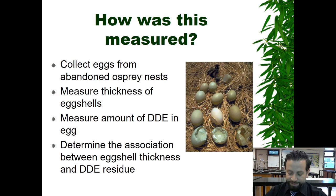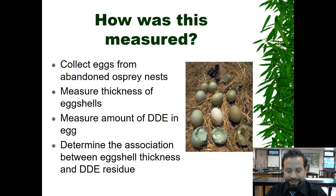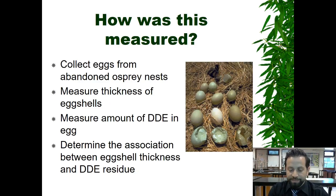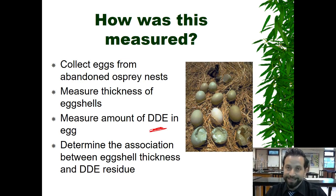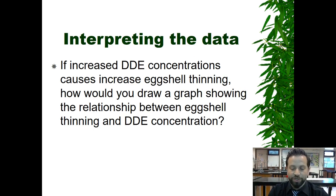So how did they measure how these eggshells were thinning out? They collected eggs from abandoned nests and measured the thickness of the eggshells, and also measured the amount of DDE in the actual egg, to determine the association between eggshell thickness and DDE residue. That's one way they went about it. Then, interpreting the data: if increased DDE concentrations cause increased eggshell thinning, how would you draw a graph showing that relationship? Basically, we're making a correlation between the two.